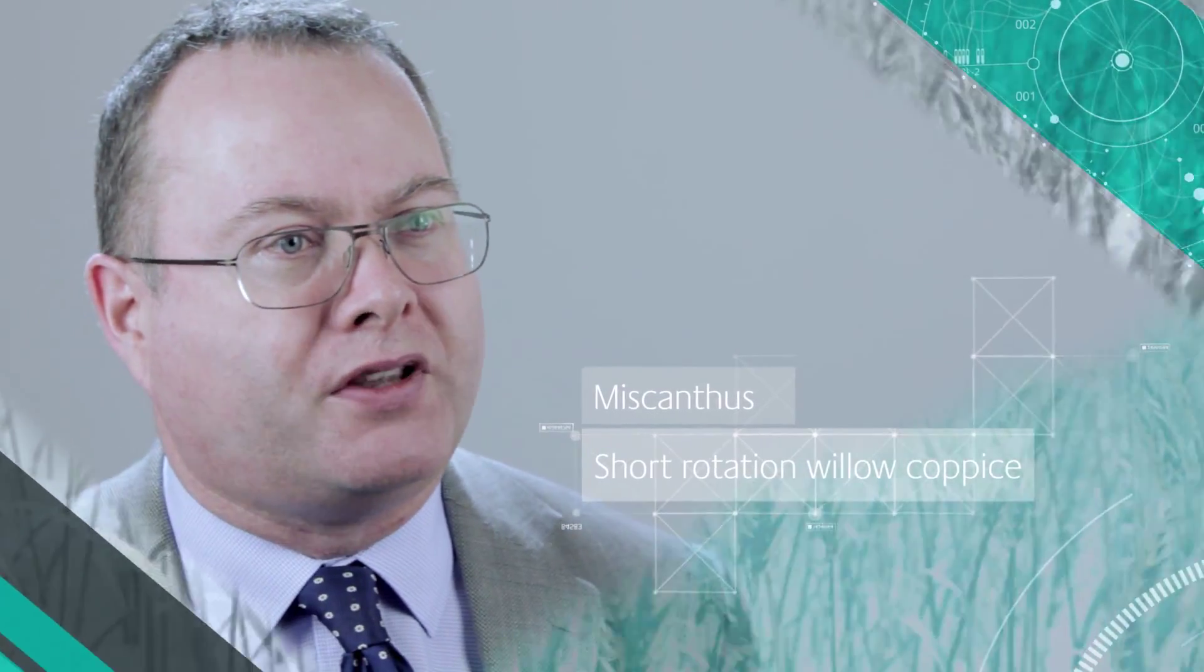Biomass is used to define anything that is or was living. Here at the ETI, we're interested in specially grown non-food bioenergy crops such as miscanthus and short-rotation willow coppice. We want to find out how the properties of these biomass vary and importantly why they vary.